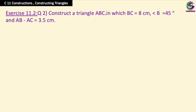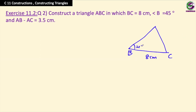Next question: construct a triangle ABC in which BC is 8 centimeters, angle B is 45 degrees, and AB minus AC equals 3.5 centimeters. So AB is the longer side. When you take away the third side you get point D at 3.5 centimeters, which means AB is bigger. We can construct the extension on side AB.